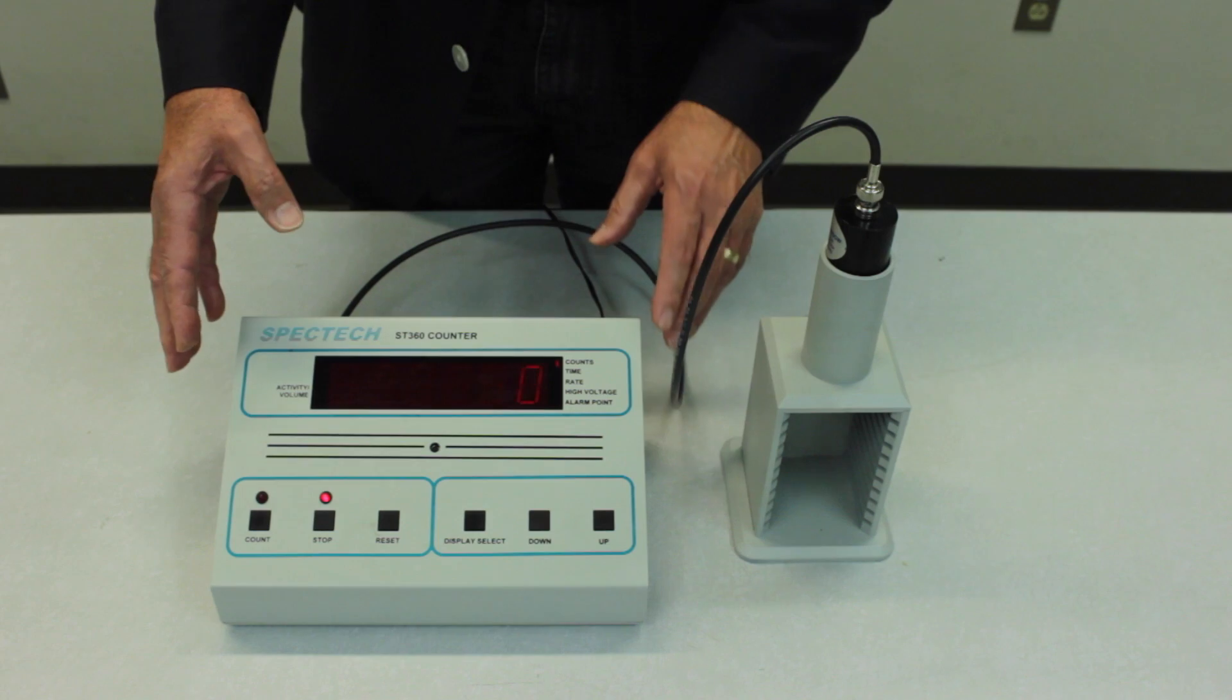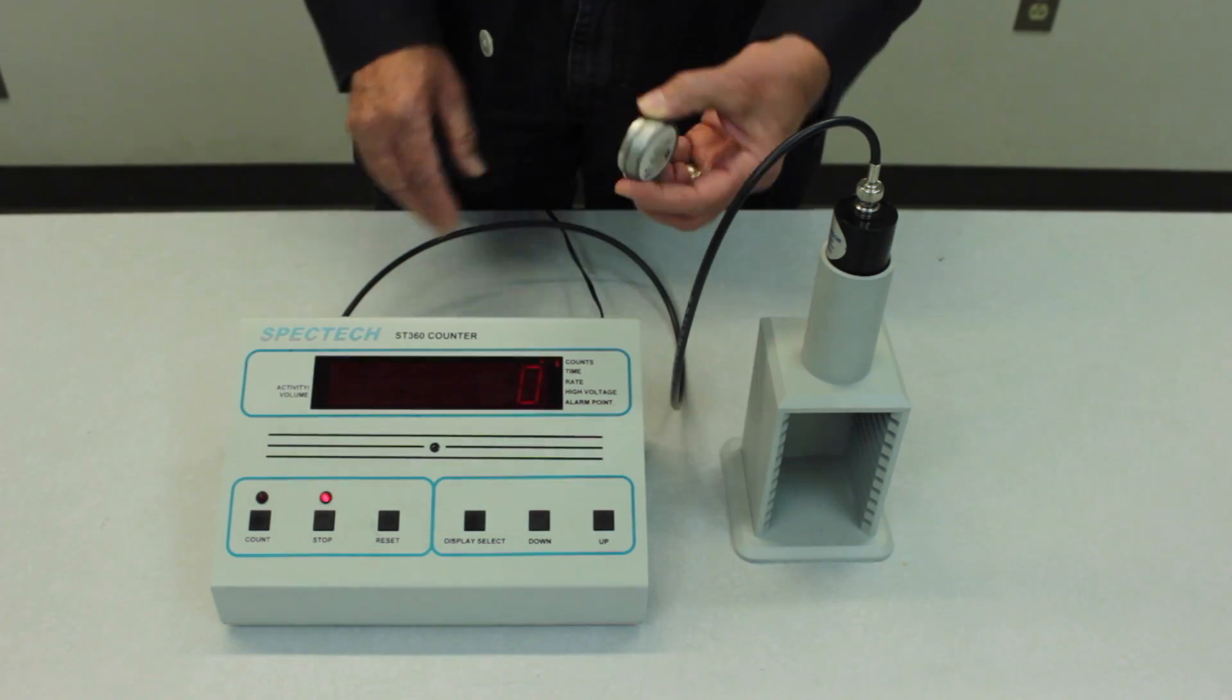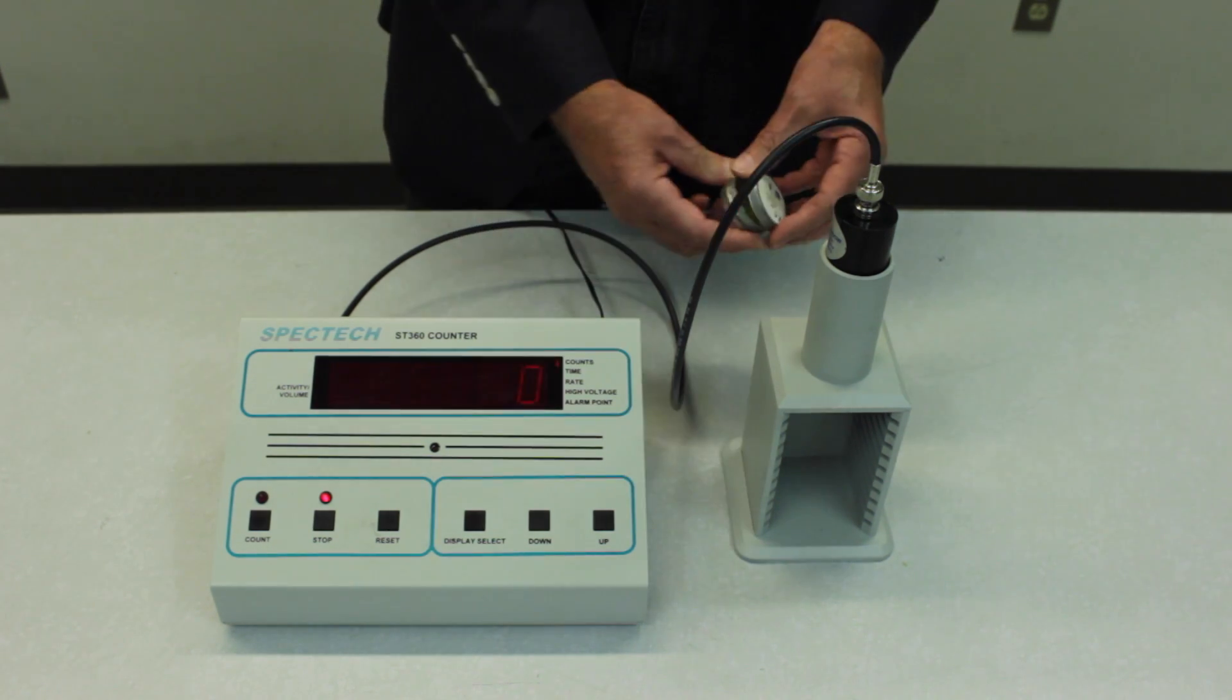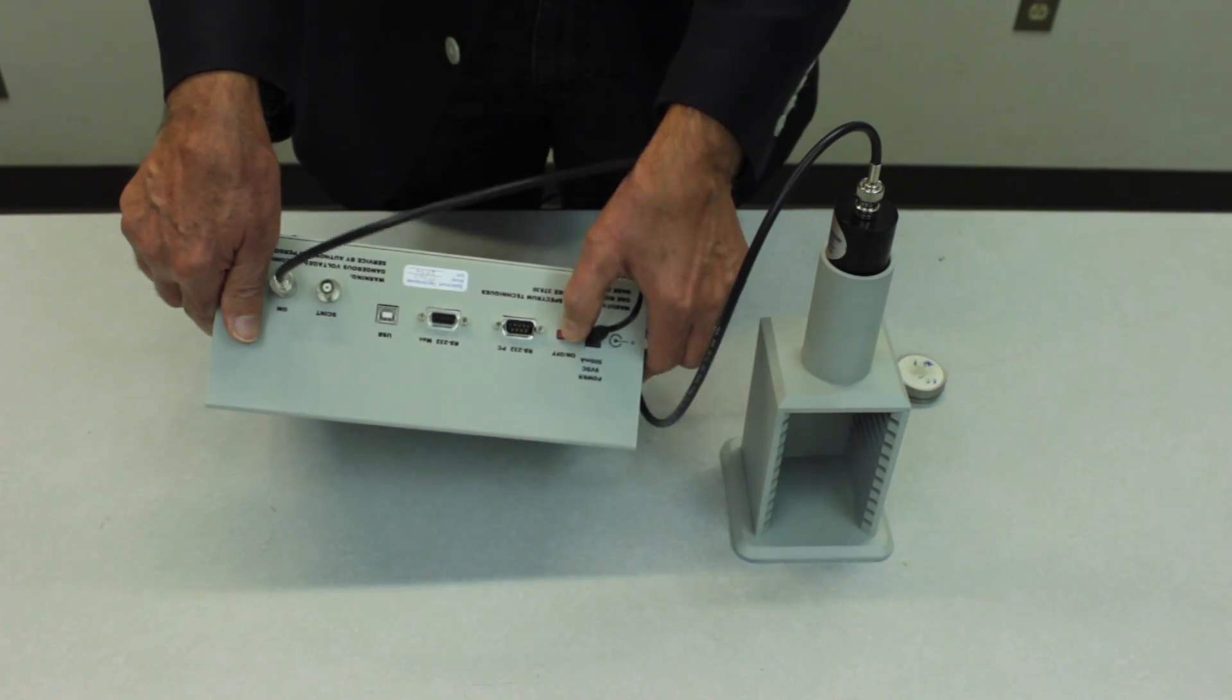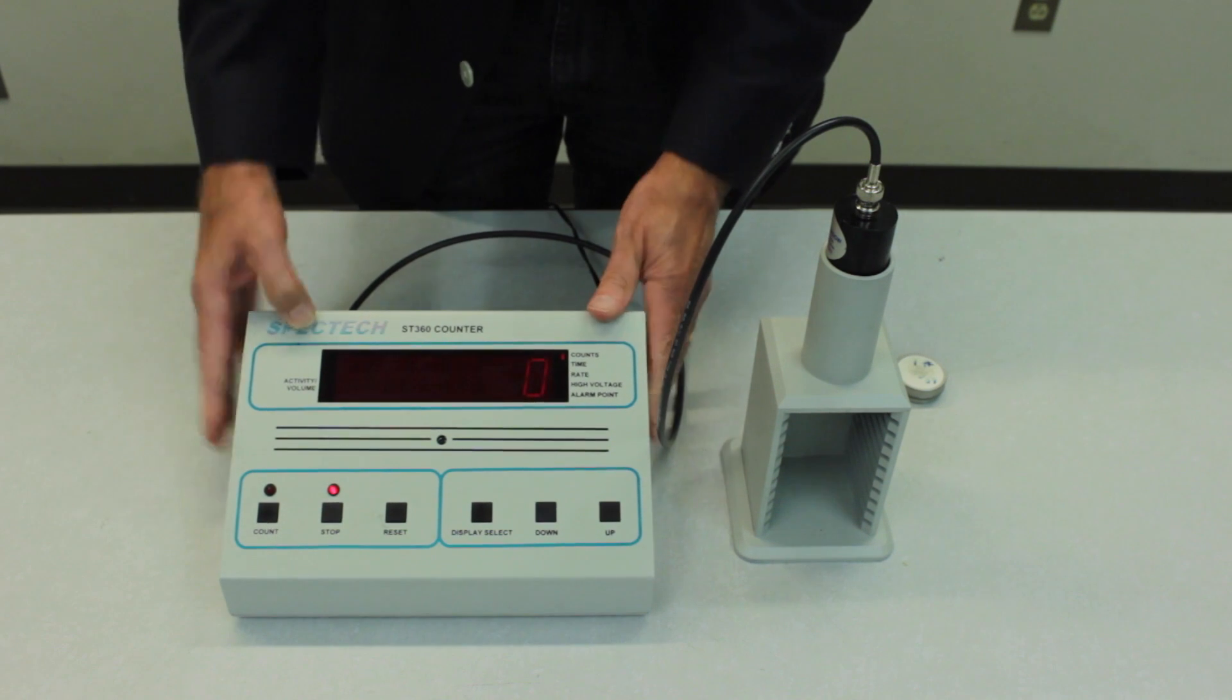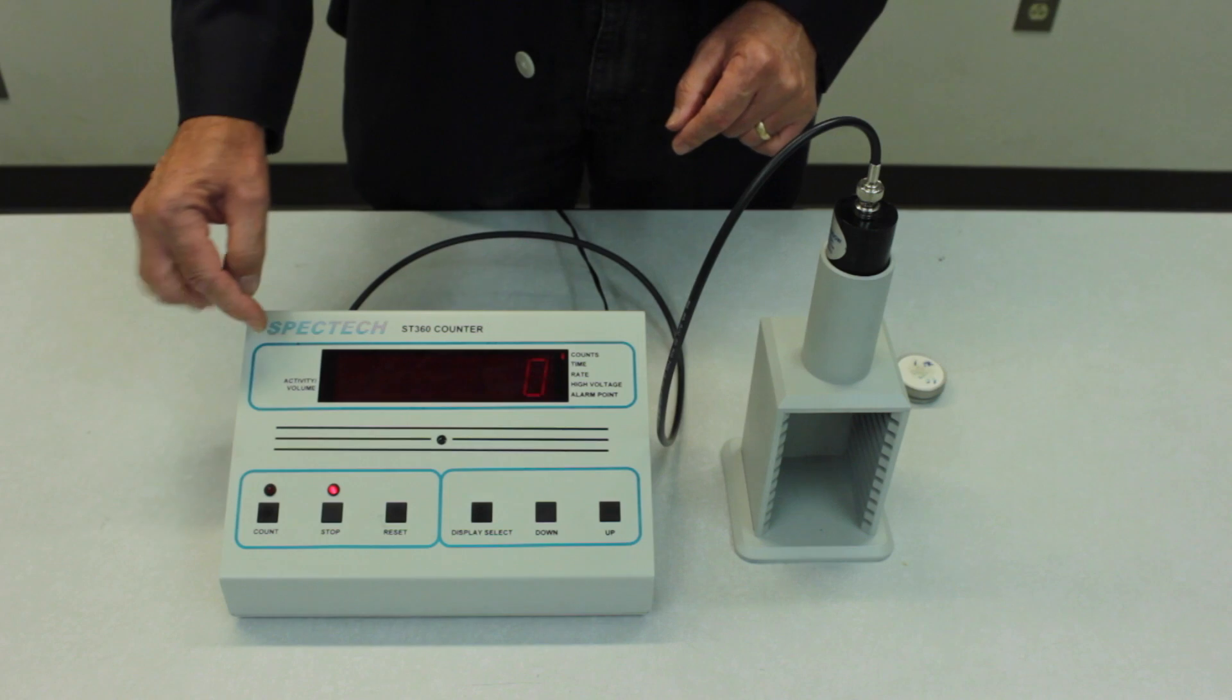In order to do the plateau curve measurement all you need is the Geiger counter apparatus and a source of radioactive material. So the instrument turns on by the power switch in the back. You just press the red button to turn it on. Then what you'll need to do is to set the counting interval and the high voltage.